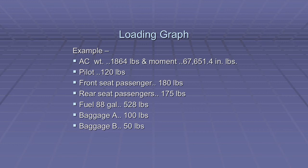In this example, we will use an aircraft with an empty weight of 1,864 pounds and an empty weight moment of 67,651.4 inch pounds. We have a pilot that weighs 120 pounds, a front seat passenger that weighs 180 pounds, a rear seat passenger that weighs 175 pounds, 88 gallons of fuel or 528 pounds, 100 pounds of baggage in Baggage Compartment A, and 50 pounds of baggage in Baggage Compartment B.